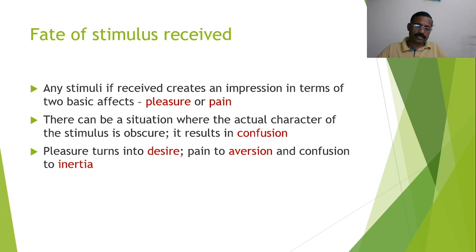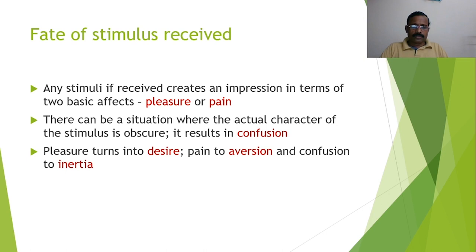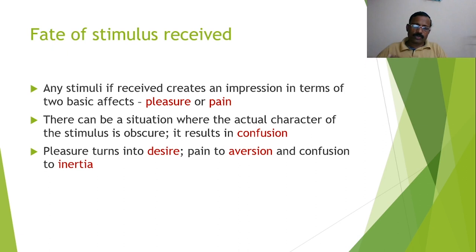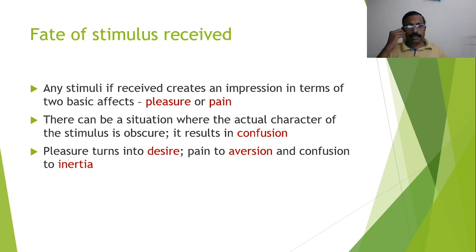Pleasure, pain, and confusion can turn into desire, aversion, and inertia respectively. Icchha-dvesha, sukha-dukha are the basic things happening. The third variable is difficulty in deciding the real characteristic of the stimulus — confusion — which leads a person to inertia or inhibition. The dichotomy thus develops into a triplet: desire, aversion, and inertia.